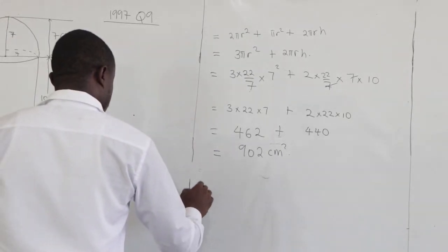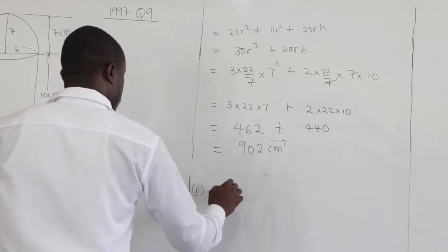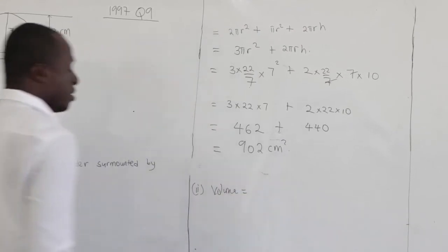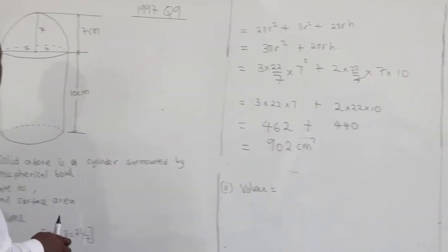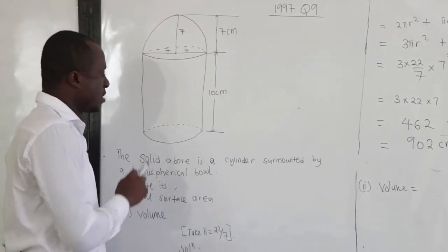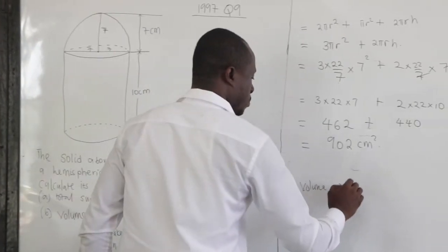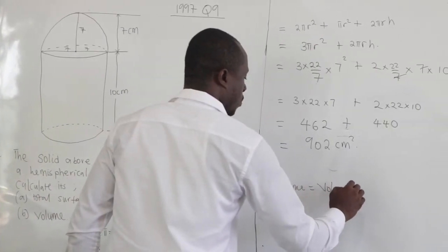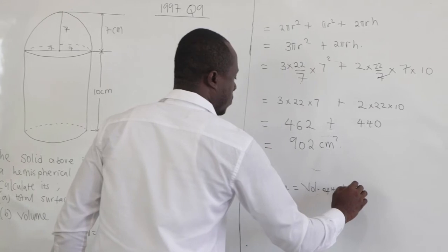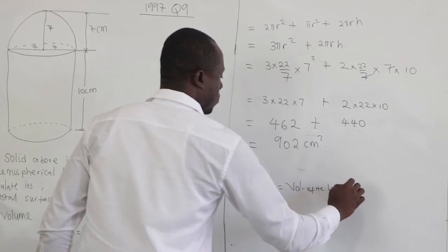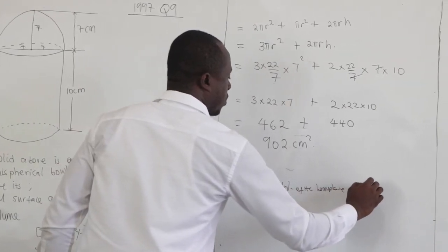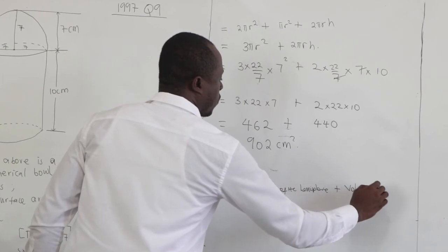The second one is telling us to find the volume. Now, the volume is made up of the volume of the hemisphere plus the volume of the cylinder. So volume, that is volume of the hemisphere plus volume of the cylinder.